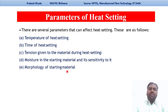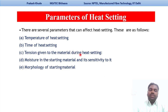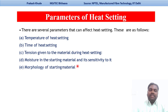Next we will discuss what parameters affect the heat setting process. There are five parameters: first, the temperature of heat setting; second, the time — how much time is given for heat setting; third, the tension — how much tension has been applied to the material during heat setting; fourth, the moisture in the starting material and its sensitivity to heat setting; and fifth, the morphology of the starting material.